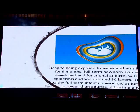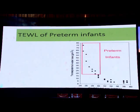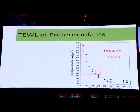A term baby will have the same trans-epidermal water loss as adult term skin. It is only after birth and how the environment interacts with the skin that changes and possible problems arise. When we look at preterm babies, the younger the gestation, the trans-epidermal water loss is actually much higher — almost 10 times that of a normal term newborn.